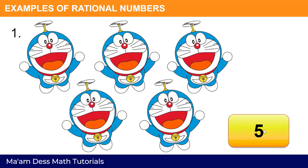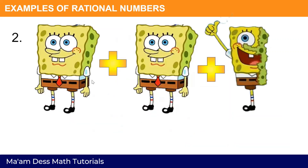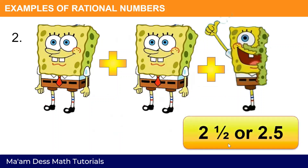Pwede rin po itong isulat as a fraction. You can write five with a denominator of one since it is a whole number. For number two, look at the Spongebob — we have two and one half, or two and five tenths. This two and one half is a mixed number, or we can also have this as a decimal. Therefore, it is a rational number.